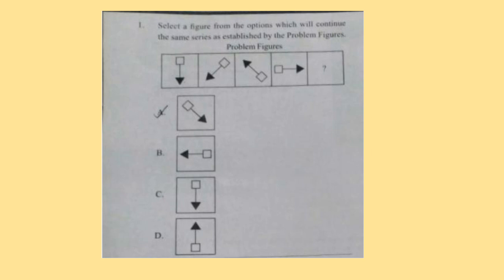Question 1: Select a figure from the options which will continue the same series as established by the problem figures. Look at the problem figures carefully and try to find out the answer yourself. You can pause the video and take your own time. Correct answer is option B. In the first figure, the arrow is facing downwards. In the second figure it moved 45 degrees clockwise. In the third it moved 90 degrees clockwise and in the fourth it moved 135 degrees. So in the fifth it will move 135 plus 45 = 180 degrees clockwise. So option B is the correct answer.